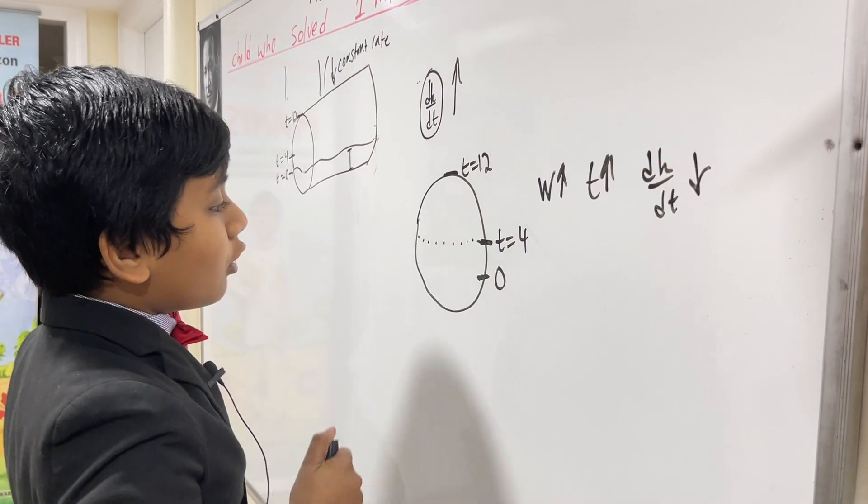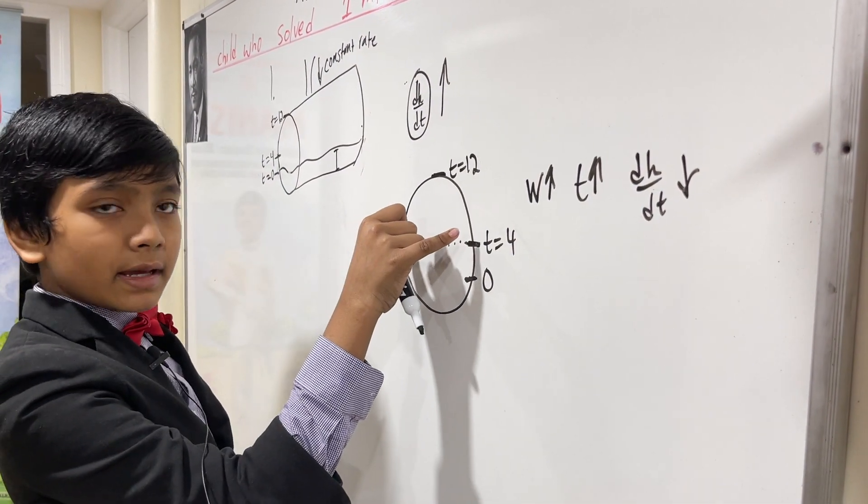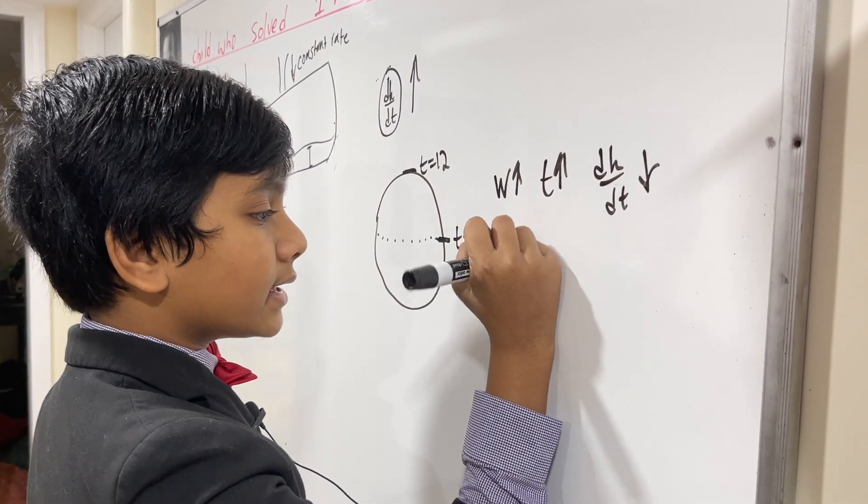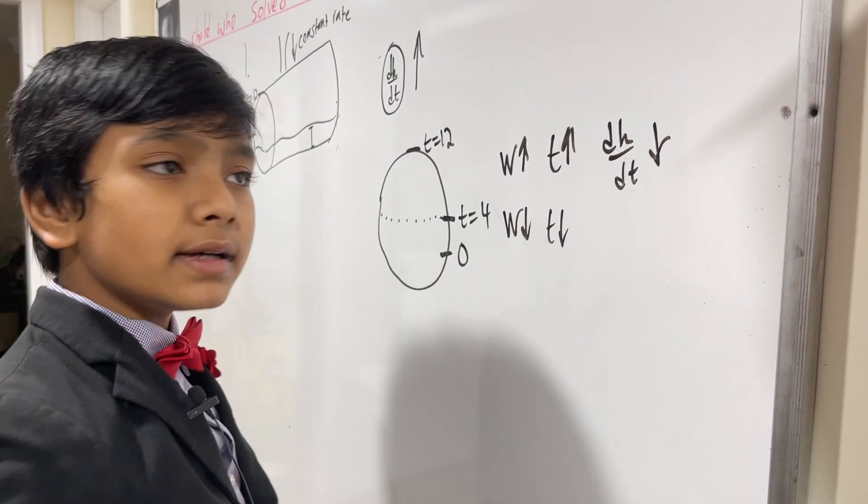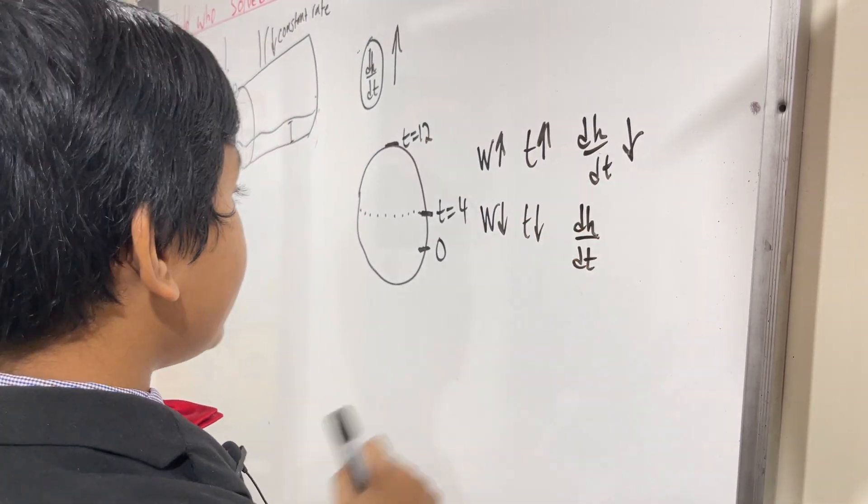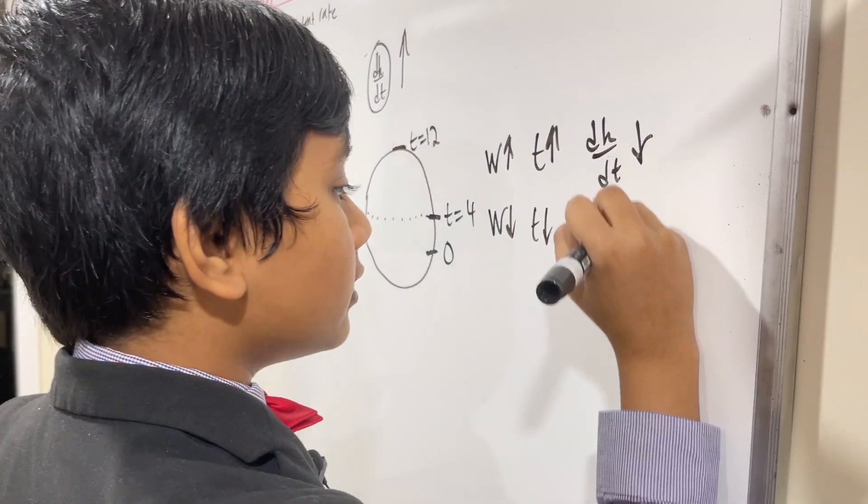And then over here, it's the opposite because the width is decreasing. So if the width is decreasing, then the time is also decreasing, and thus the rate at which the height increases will increase.